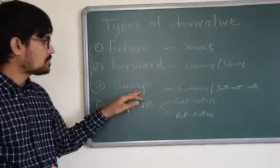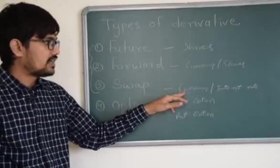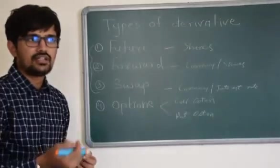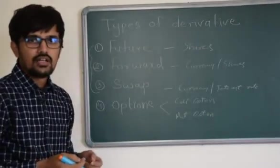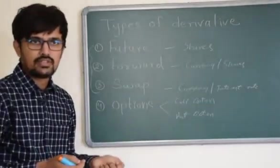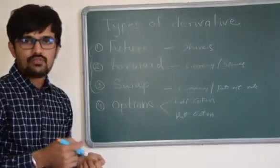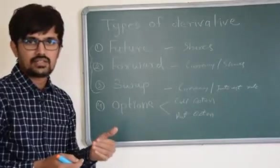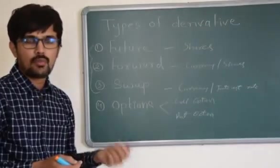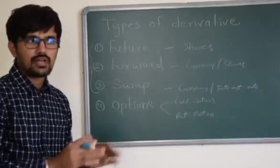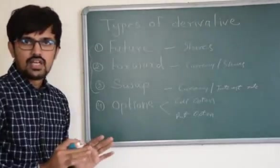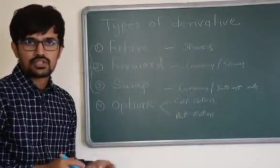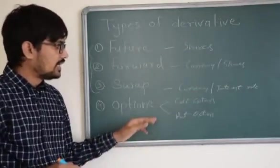Then let's go to swap. Swaps are generally used in currency and interest rate. Say for example, if I have taken an interest based on LIBOR plus 2%, so my interest rate would be fluctuating based on LIBOR. So if I want to hedge my interest rate, then I would enter into a swap agreement with bank, by which I would say look, I want my interest rate to be fixed. I don't want it to fluctuate based on LIBOR plus 2% or so. So that is the interest rate swap.